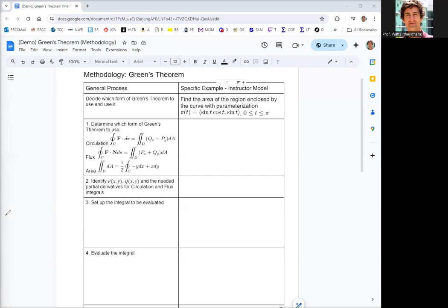There's a couple different ways to use Green's theorem. There's a circulation form, there's a flux form, and we're actually going to use it to find area, sort of the third form. This is really a modification of the circulation form.